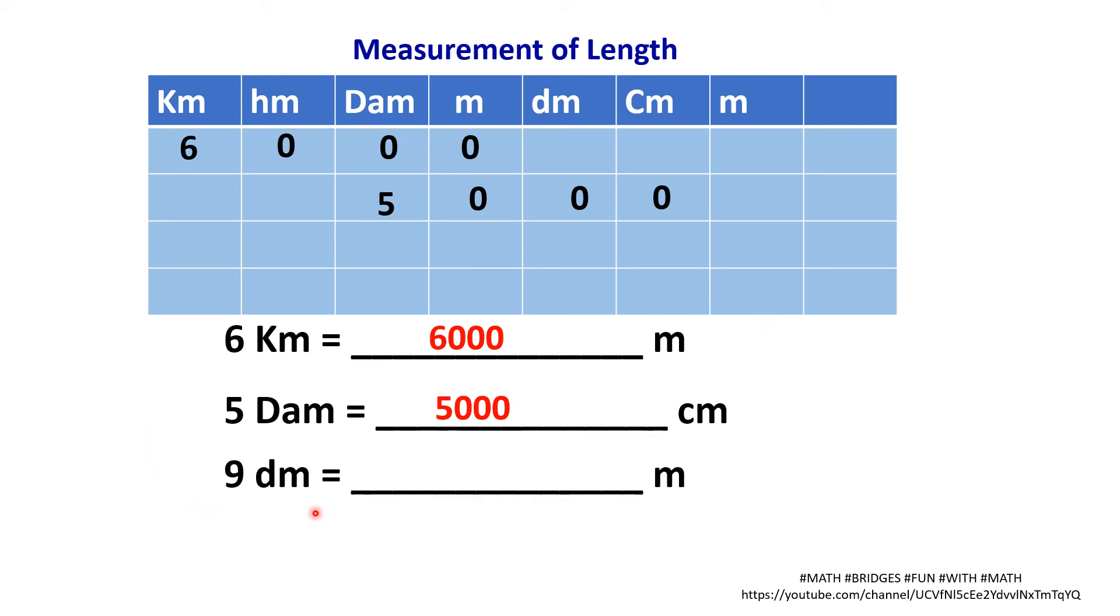Now, 9 decimeters. Decimeter, we have to convert it into meters. Here you can see small d. So that we can avoid the confusion. Capital D for decameter and this is for deci. Decimeter, small d.